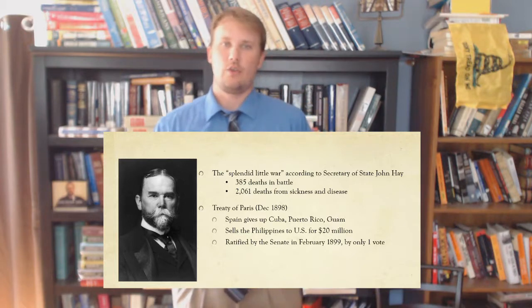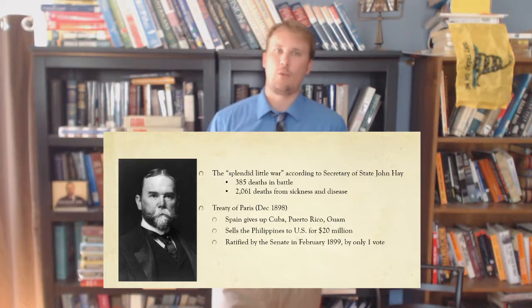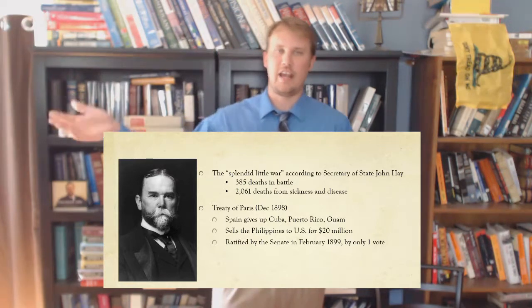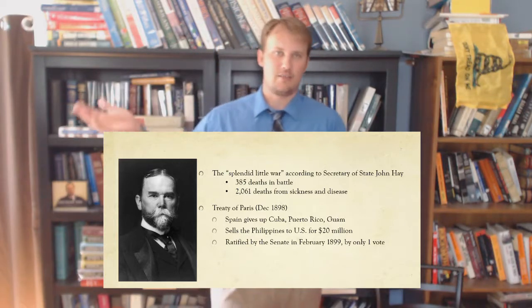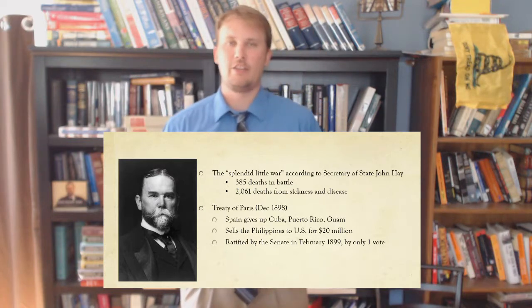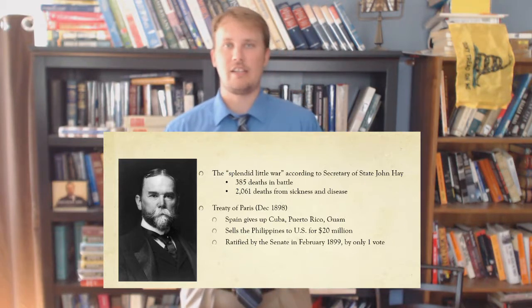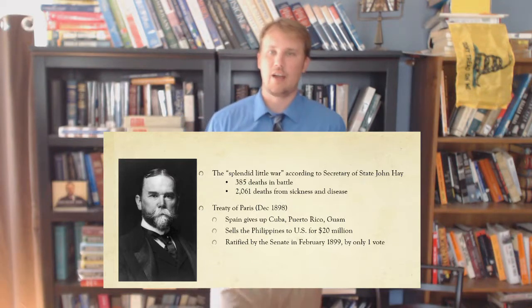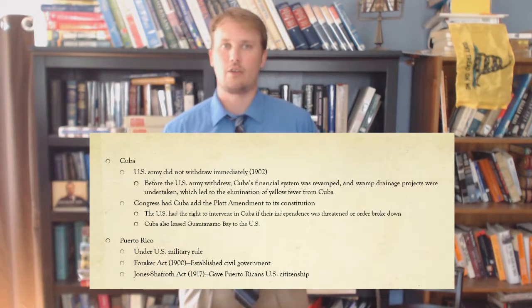In December 1898, the Treaty of Paris was signed. Spain gave up Cuba, Puerto Rico, and Guam officially, and sold the Philippines to the United States for $20 million. The American Navy even voluntarily took the defeated Spanish soldiers back to Spain — kind of no hard feelings. The treaty was ratified in the Senate in February 1899, but only by one vote. Cuba and Puerto Rico were now territories the United States controlled.